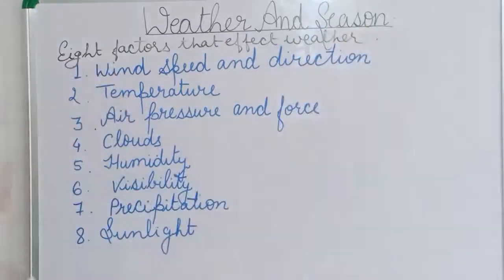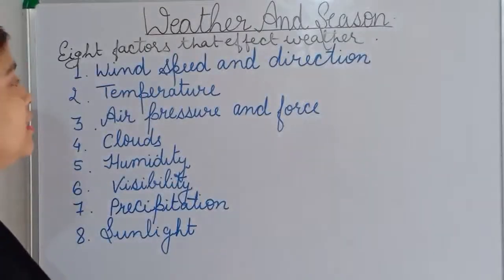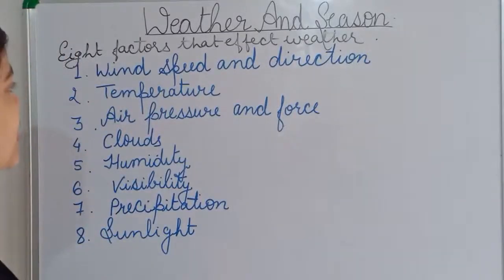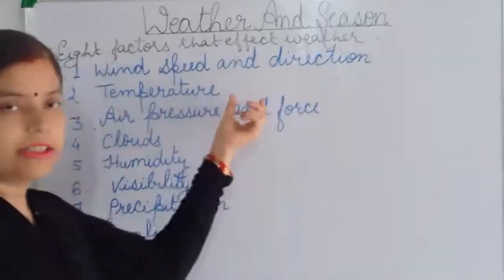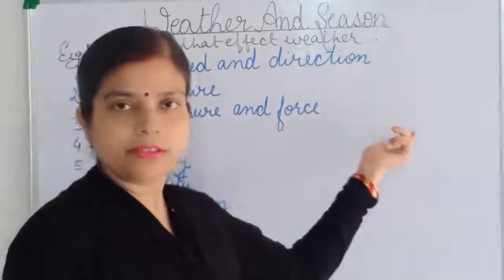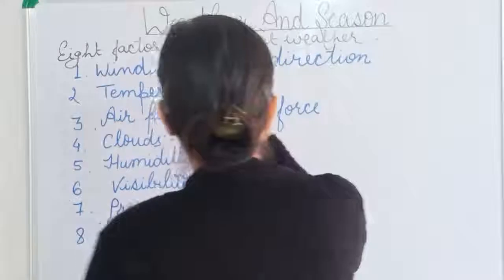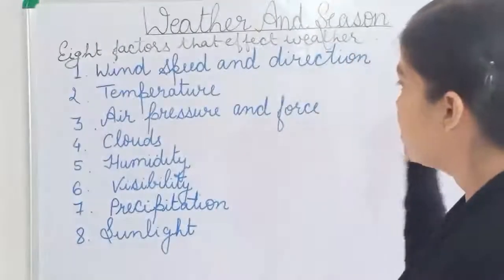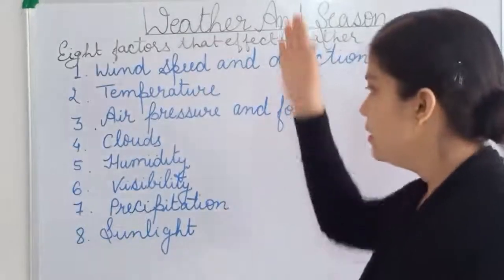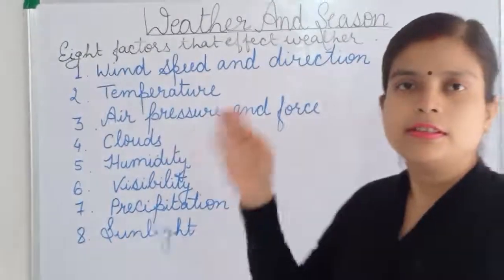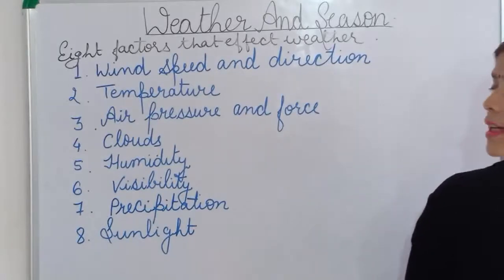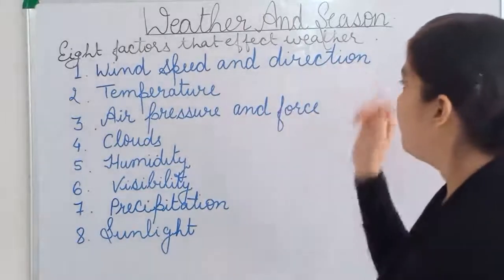Go and search the weather report on your mobile — you will find these factors written there. Temperature is from this to this, air pressure is this much, wind speed is this, wind direction is this, humidity is this percentage, visibility is this. All the factors will be written there. Go and see.